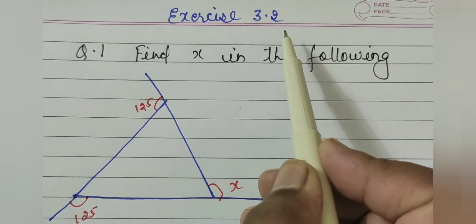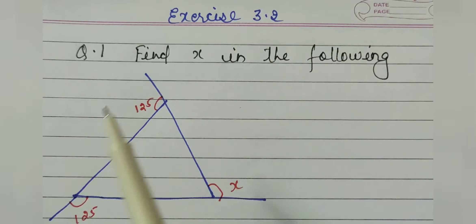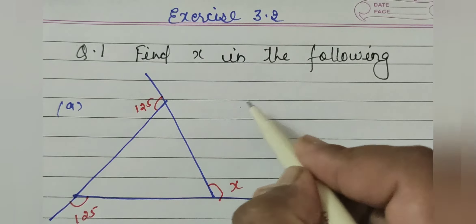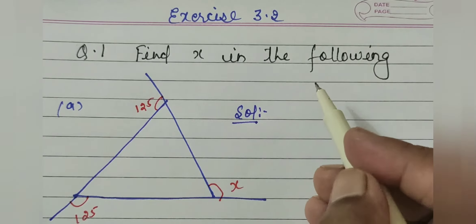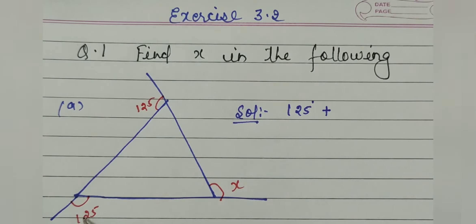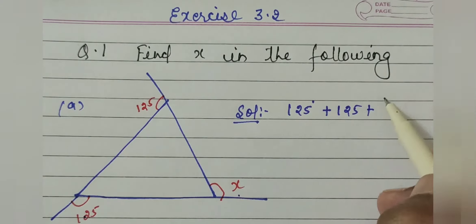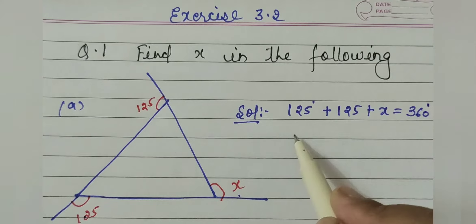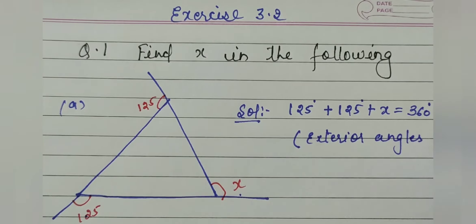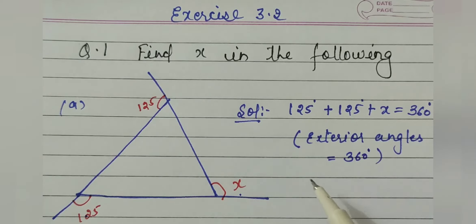Now we will start exercise 3.2, question number 1: find x in the following. A triangle is given with three exterior angles, and we have to find one exterior angle x. I will solve this question using the exterior angle sum property: the sum of exterior angles of any polygon equals 360 degrees.